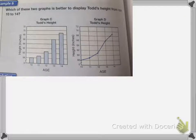This next one, which of these two graphs is better to display Todd's height from age 10 to 14? So Todd's height gradually increased during these years, which is displayed better in D.